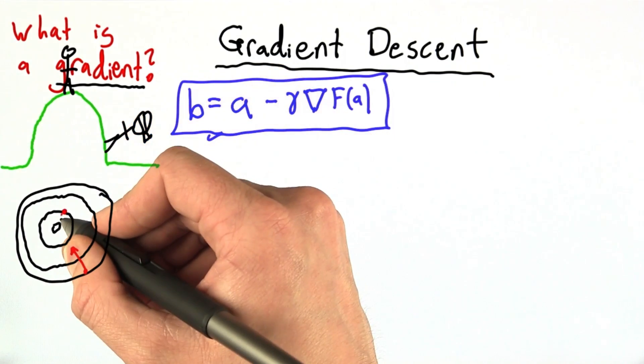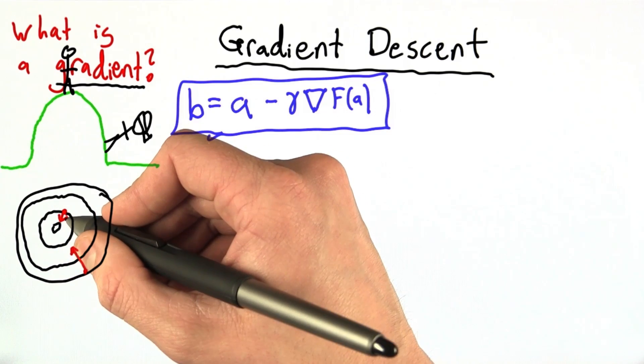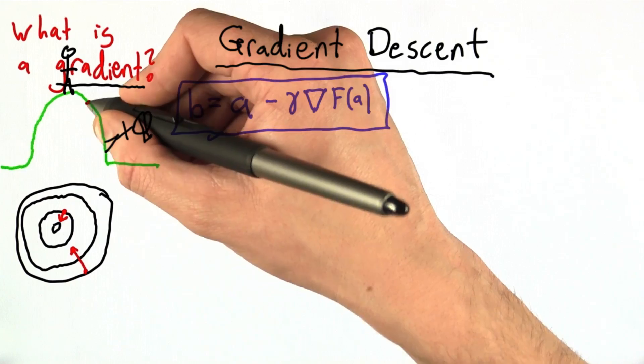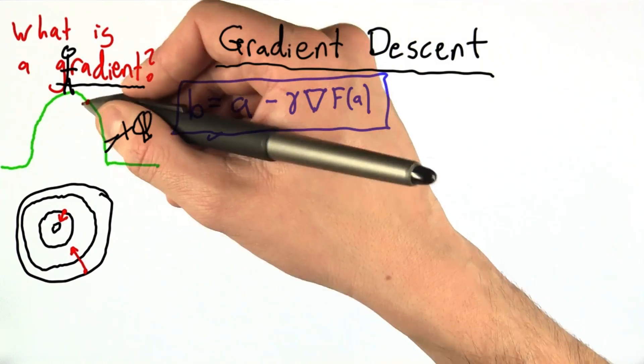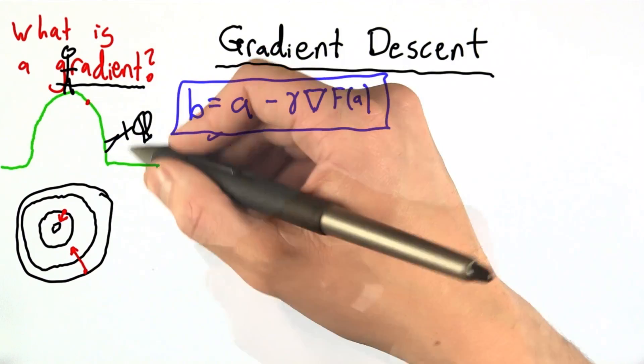If I was over here and taking the gradient, I would still be pointing uphill, but the vector wouldn't be quite as long now because now we're up here and the slope isn't so great. And with a reduced slope comes a reduced gradient and a reduced step size for a blindfolded hill climber.